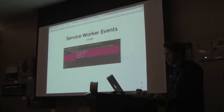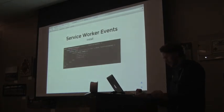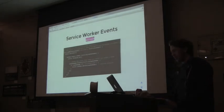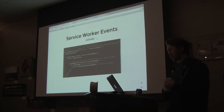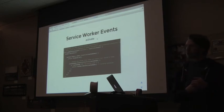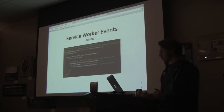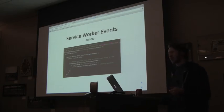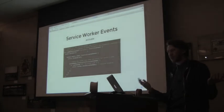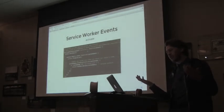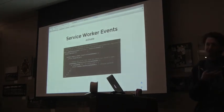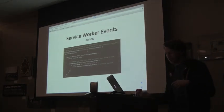After those all get added, it bubbles back up, says we're all done, and the install event finishes. Directly after that, we get the activate method. The activate method gets called every single time the service worker.register method is called. Essentially what the activate method is for is like versioning out your app. Since you're caching assets, if they ever change you'd still be serving the old ones because they're already cached, so you have to version them out.